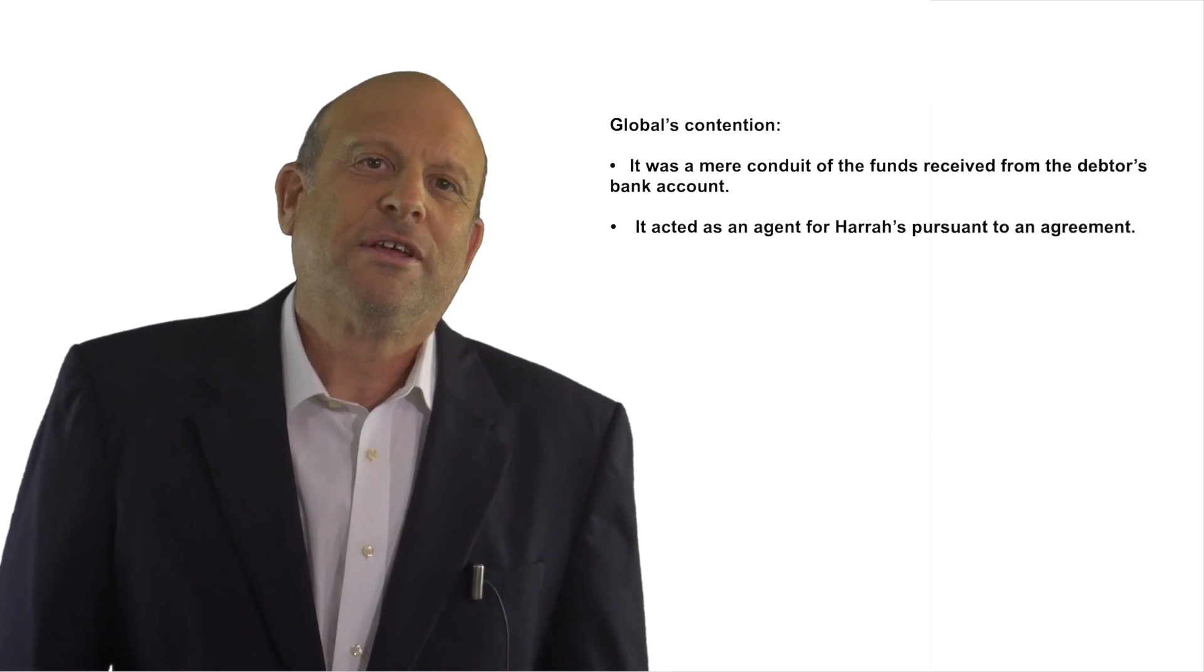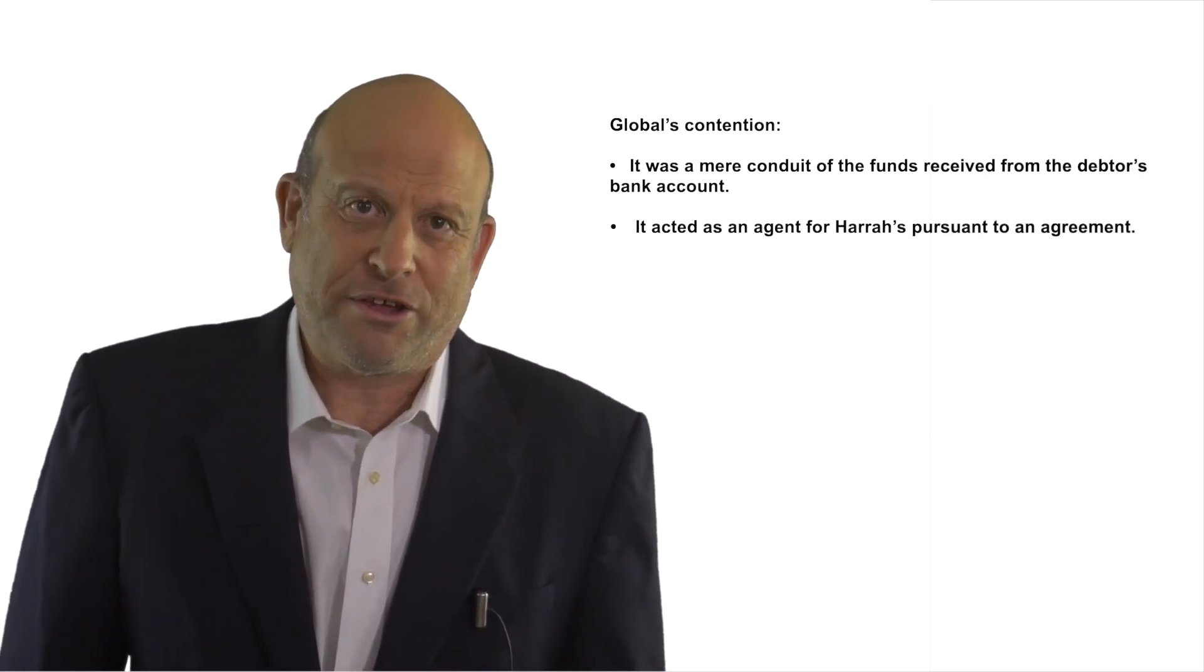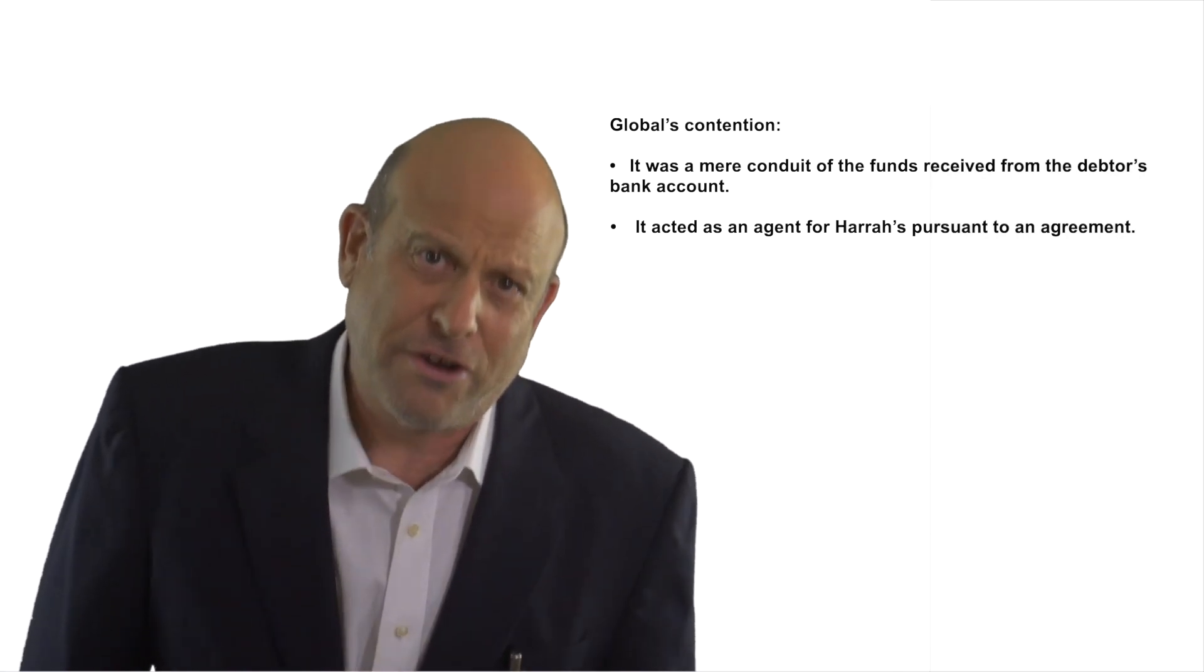Global argued that it was a mere conduit of the funds from the bank and it was also acting as a contractual agent for the casino. Therefore, it could not be the initial transferee. Global's argument was that it had no choice under the contract to wire the funds received by the bank to Harrah's. Since the funds were not under the custody and control of Global, it was a conduit, and the court agreed.